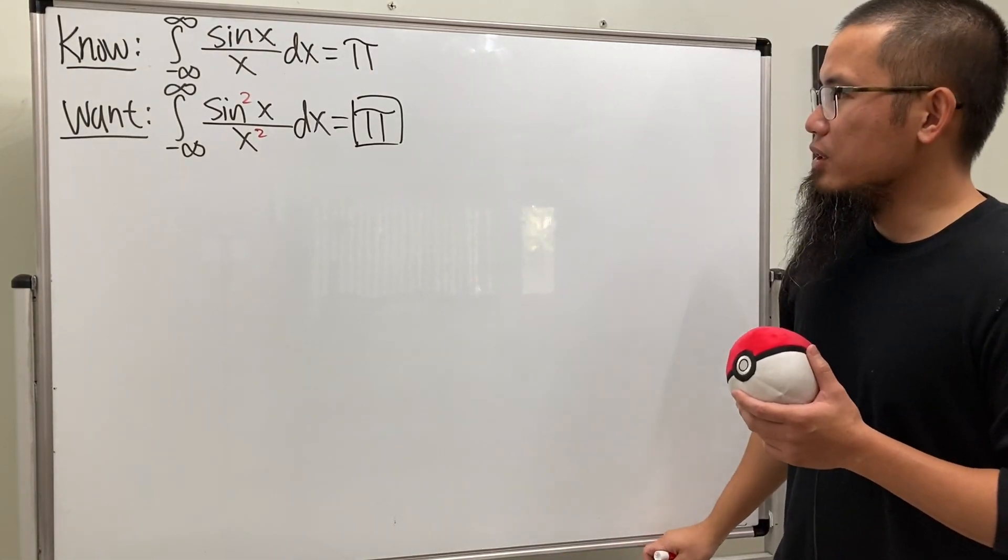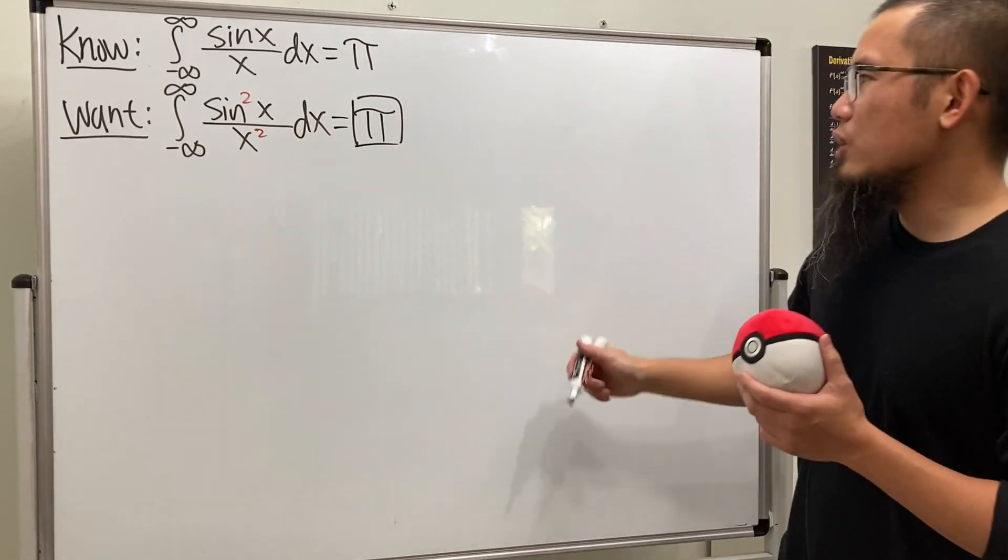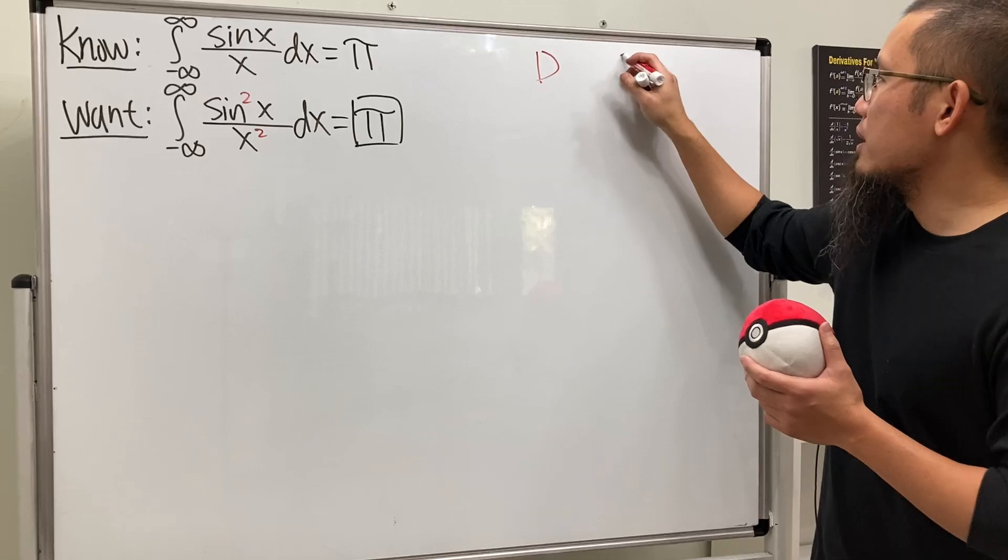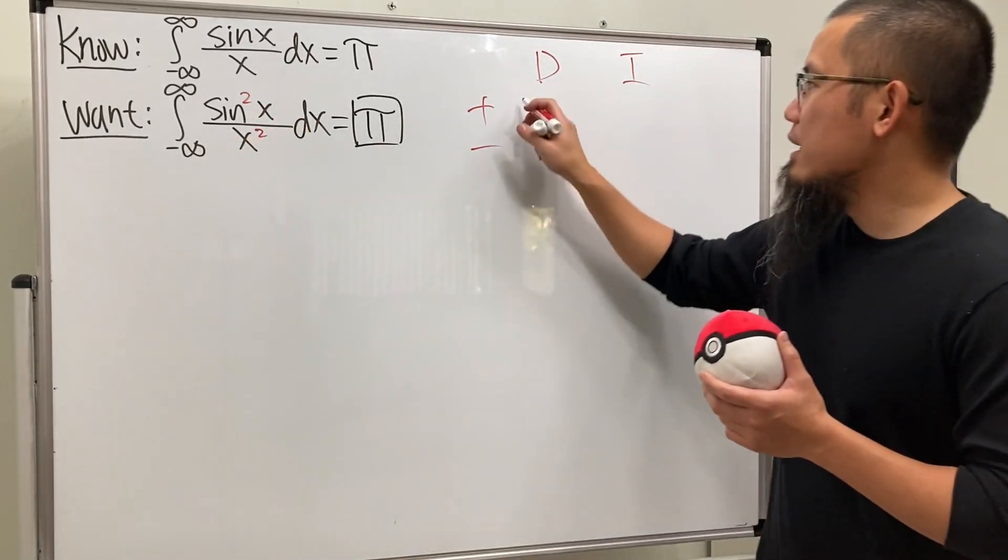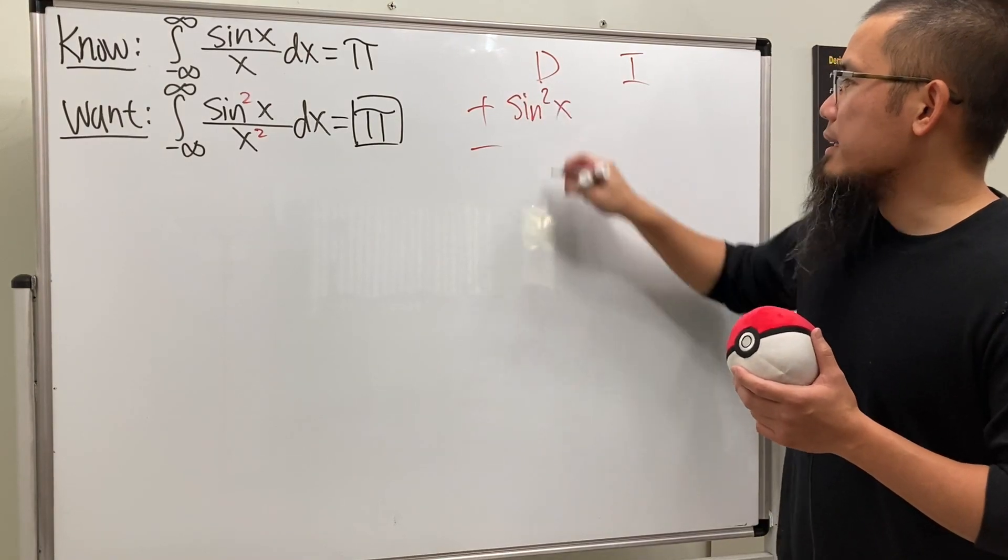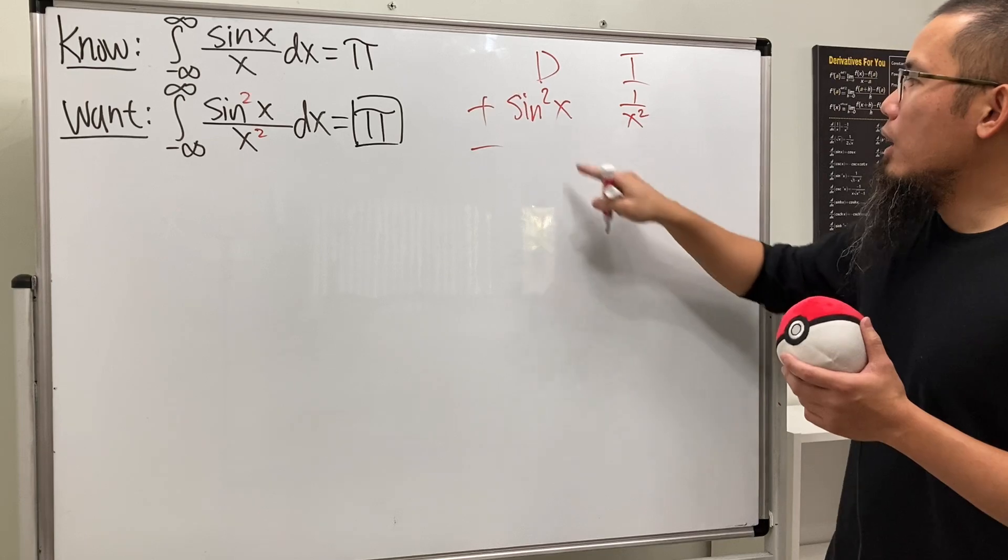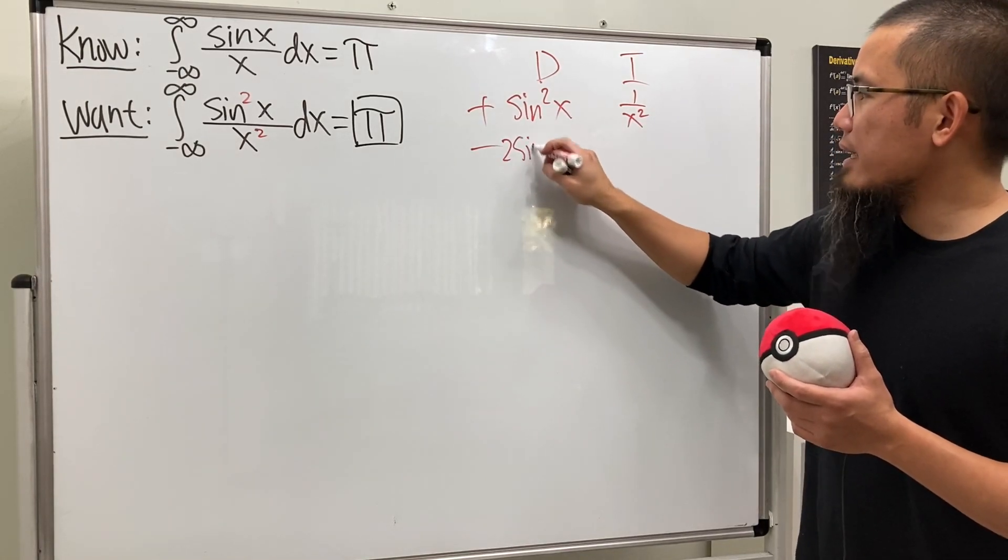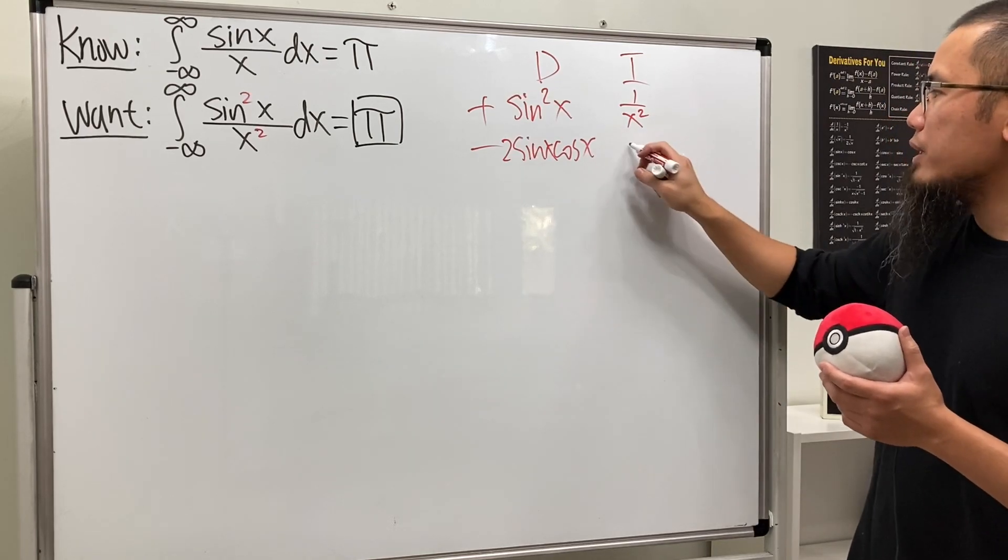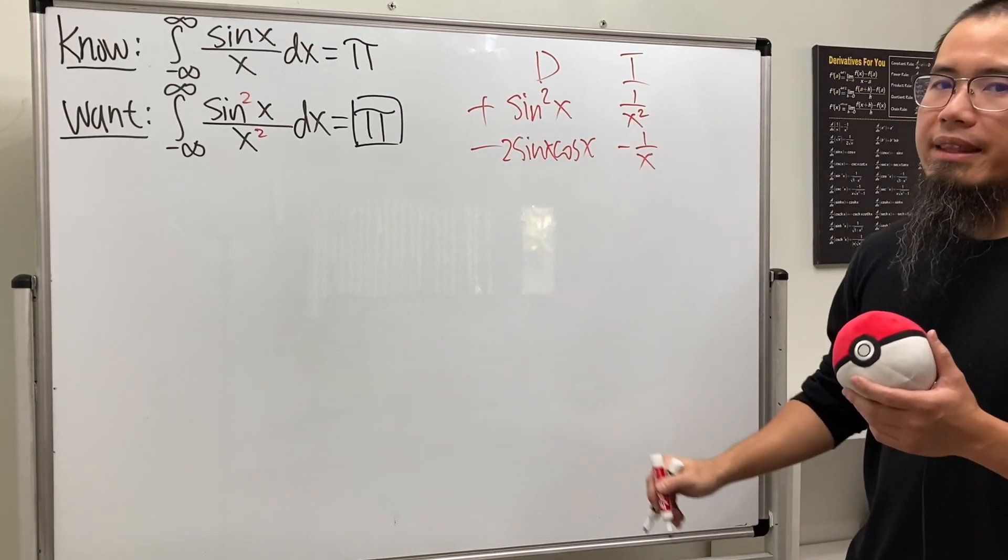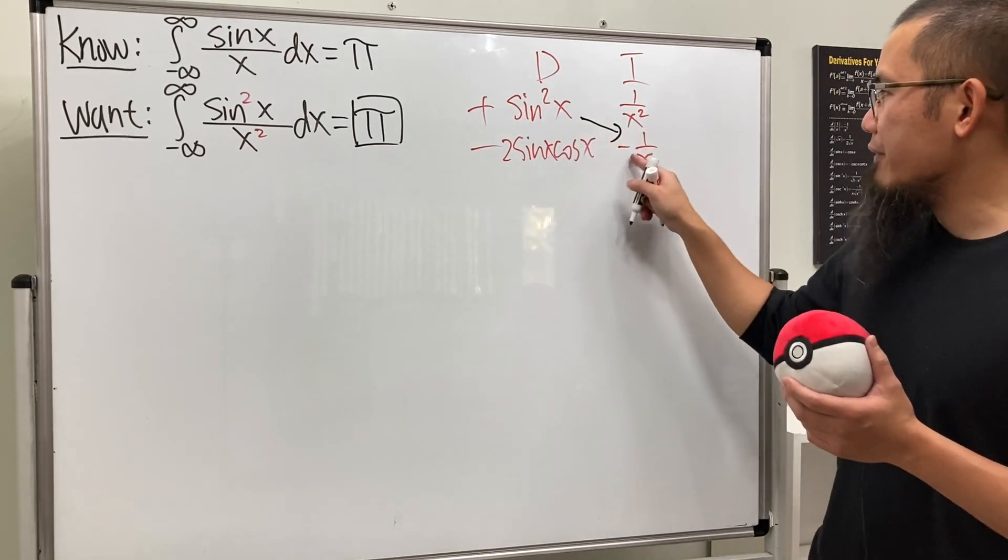But anyway, let's see how we can take care of that. Here is the deal. We can actually just integrate this with integration by parts. So I'm going to use that right here. We will be differentiating sine squared x and then we will integrate one over x squared. Doing this, we get 2 sine x times cosine x, and then integrating we get negative one over x.